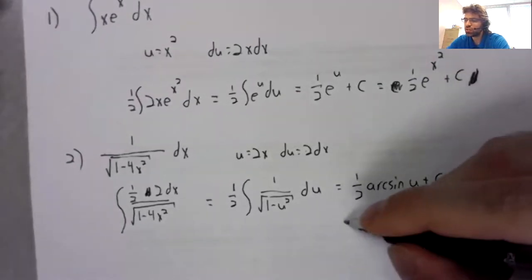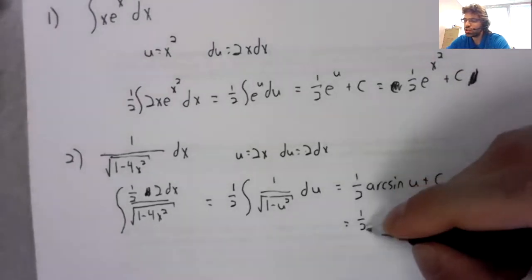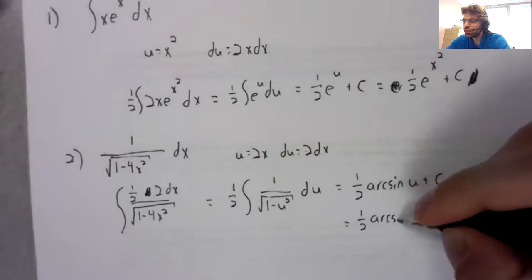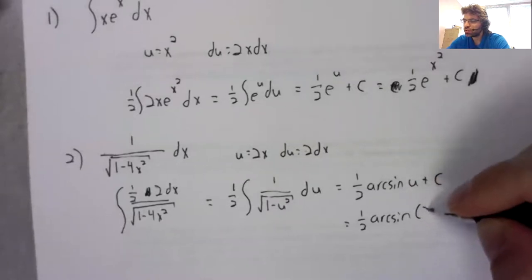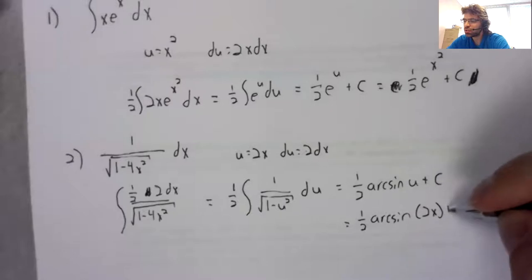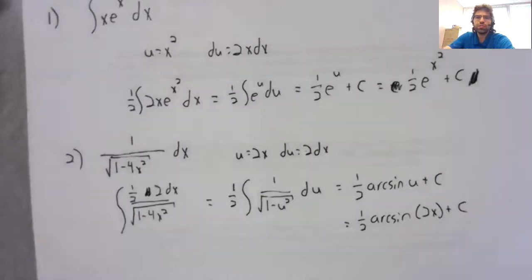One-half the arcsine of 2x plus a constant of integration.